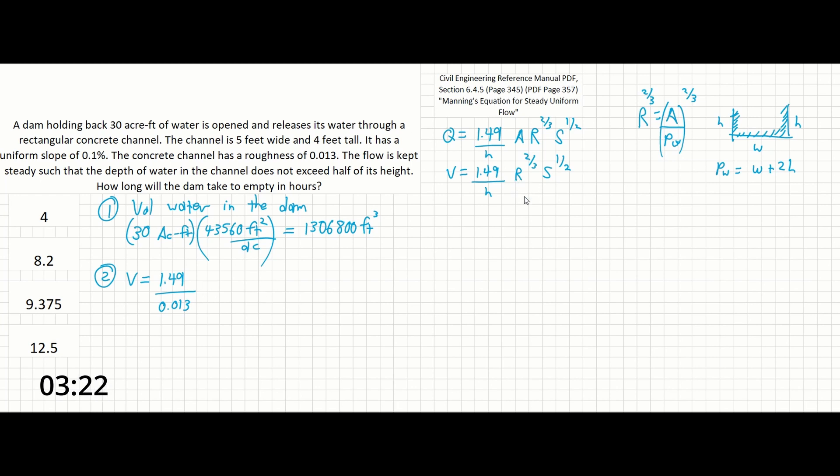So we're going to say 1.49 over 0.013 times—we're going to split up the R here into its constituents to make it easier to solve if you want to visualize it as we go. So the area of the dam in this case is 5 feet, which was the width. And it was noted that the flow is kept such that the depth is always going to be half the height of the 4-foot tall dam, so it's going to be 2 feet.